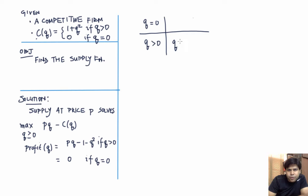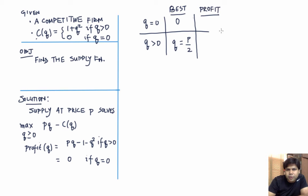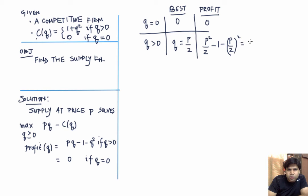At Q = 0, the profit is 0. At Q = P/2, the profit is P times P/2 minus 1 minus (P/2)², which simplifies to P²/2 minus 1 minus P²/4, giving P²/4 minus 1.